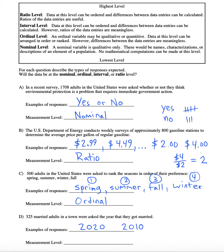Would it be ratio level though? No, and here's why. Even if we found somebody who was married in the year 1010 AD, if we were to divide 2020 by 1010, it's twice as much time since 0 AD — but that doesn't really have meaning in this context. The year 0 AD would be an arbitrary calendar year, so ratios wouldn't be useful here. This is just interval level: the differences between the years matter, but the ratios don't.